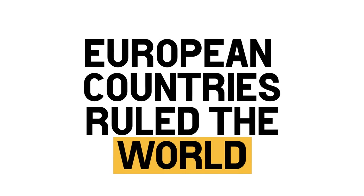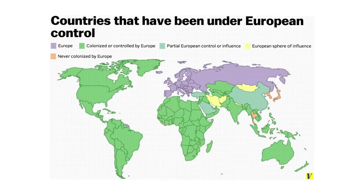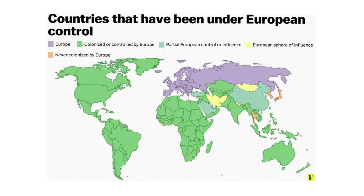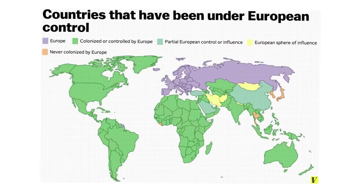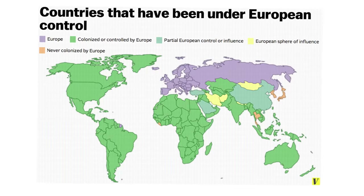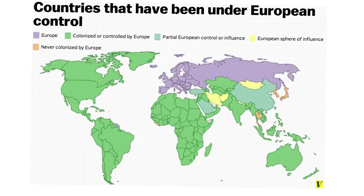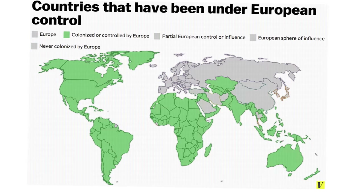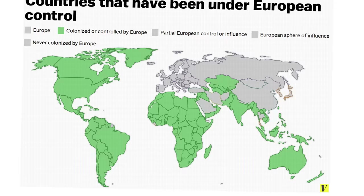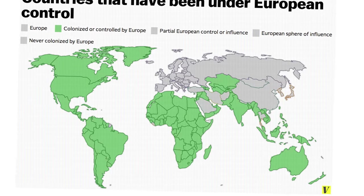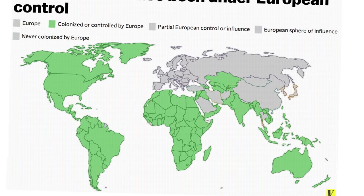At a certain point in history, European countries ruled the world. We can see it here on this map of areas of the world which have, at any given time, been under European control. The vast majority, if not all of these times of control, took place during the era of colonial empires. Most of the world map is in green, meaning that it was under direct control of Europe — most of North and South America, Africa, Australia, and Southeast Asia. Only a few exceptions exist.